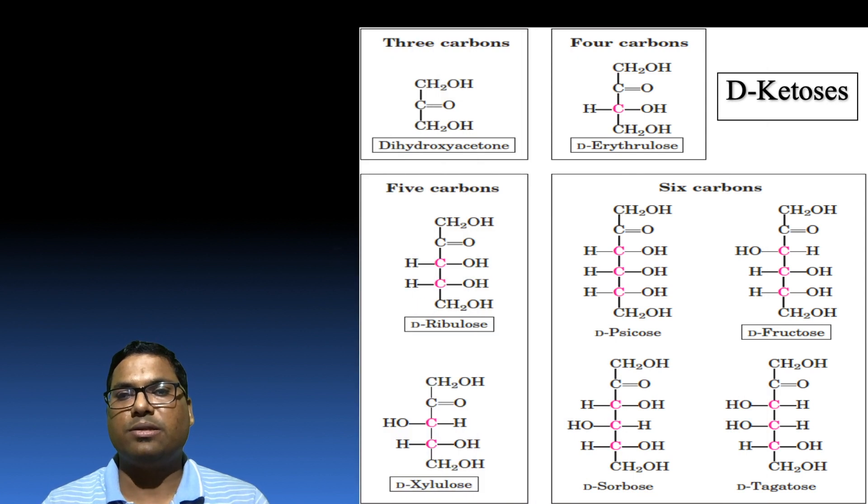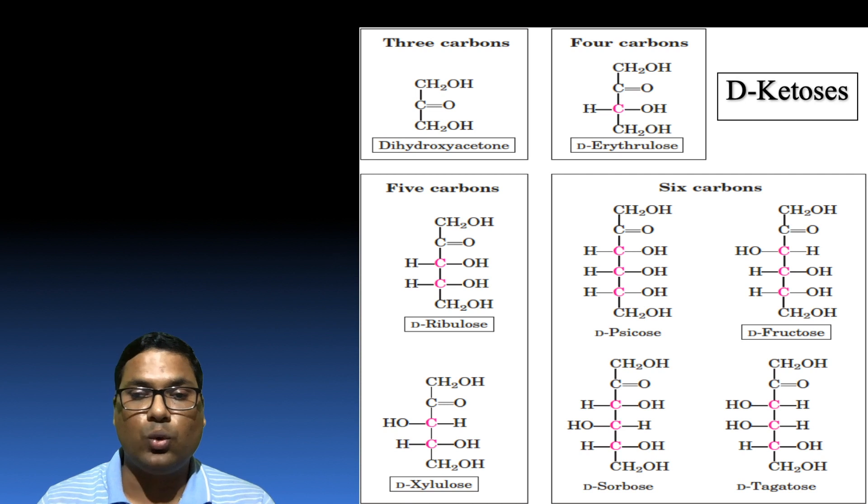Then if we take the examples of ketoses, then there are the examples of starting from three carbon we have dihydroxyacetone, then for four carbon we are having erythrulose, while in case of five carbon we are having ribulose and xylulose being one of the examples, but in case of six carbon we are having fructose being the most prominent example over here.